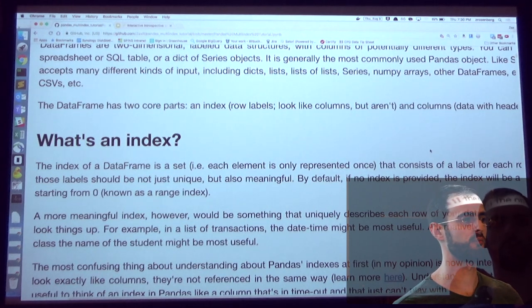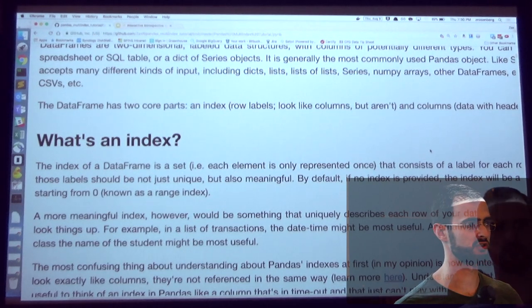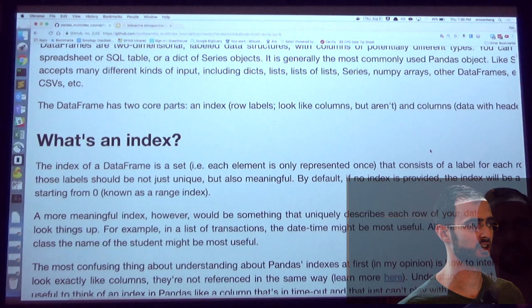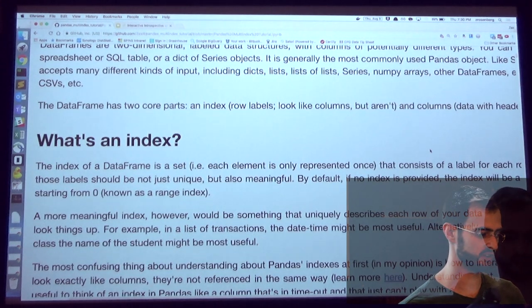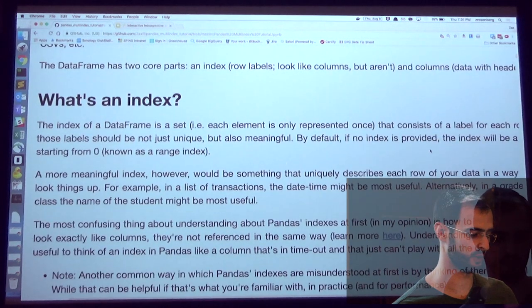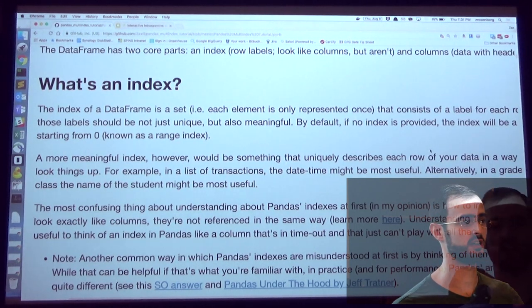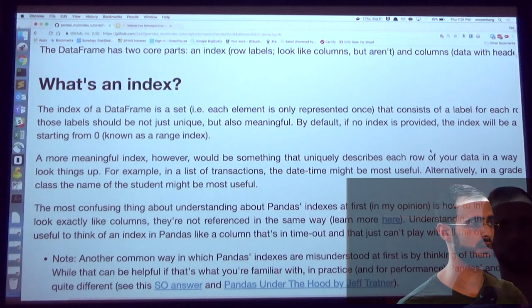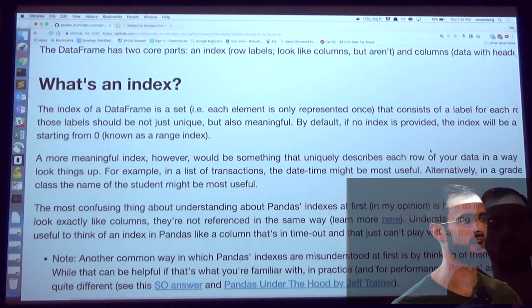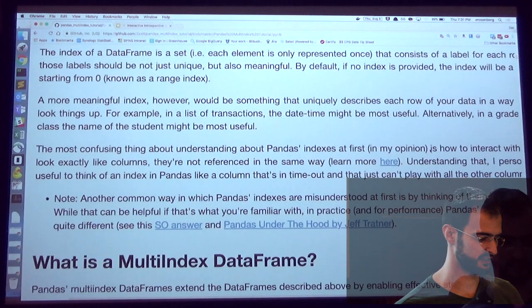And an index is meant to be a set, meaning each element is only in there once, so mathematical type set. And it's used to label each of the rows of your data uniquely. So that way, if I want to look up particular bits of my data, I can look it up by the row reference. By default, in most languages, SQL included, you'll have a range. It'll just be start from 0, 1, 2, 3, and keep counting. That's great. It's unique. But it's not terribly useful, because there's no meaning to it. And so Pandas data frames allow you to actually use other kinds of data.